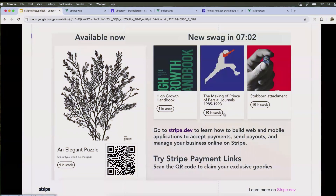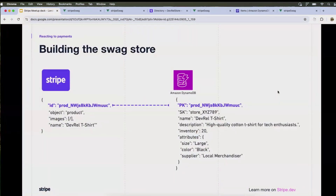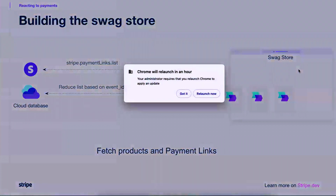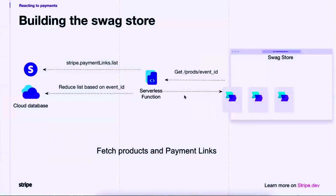Let me show you the architecture in diagram format. To hydrate the page with all available products, we have our own API on our Amazon application using API Gateway. That API Gateway proxies the call on to Stripe, grabs all the products using the Stripe payment links list API call, checks that against our DynamoDB database to make sure they're relevant for this event, and then renders that on the front end.